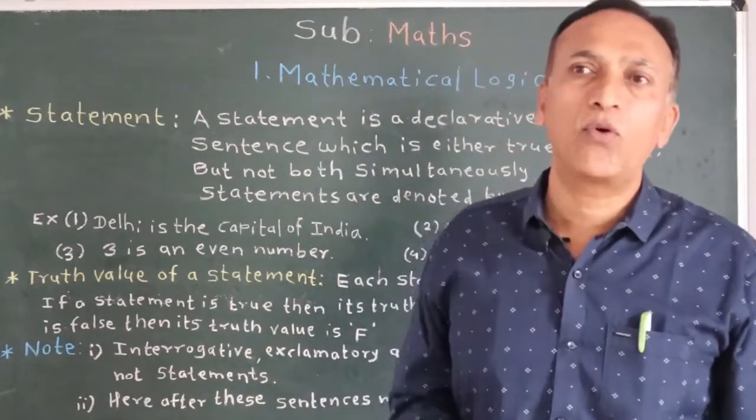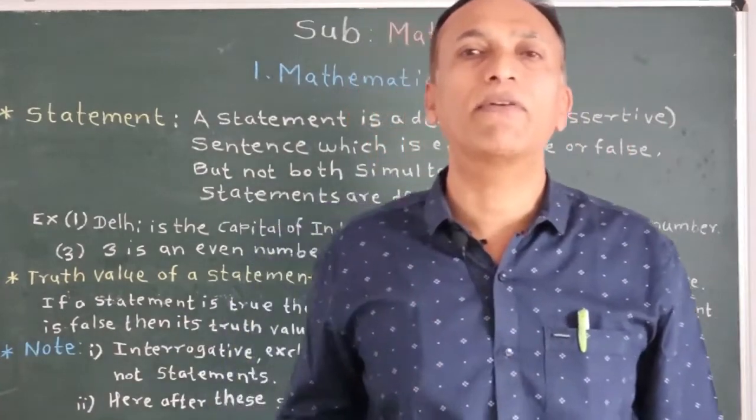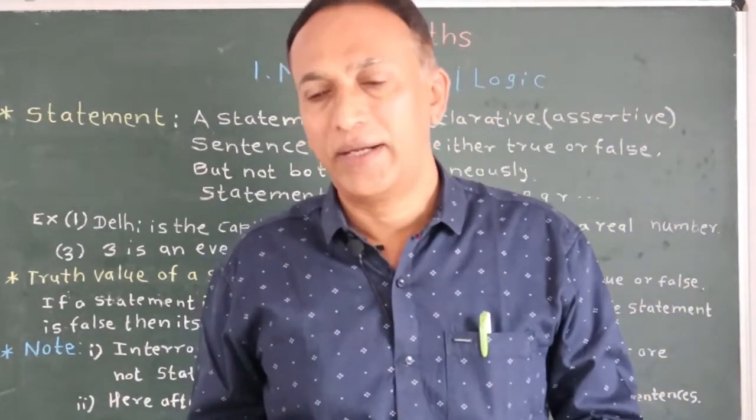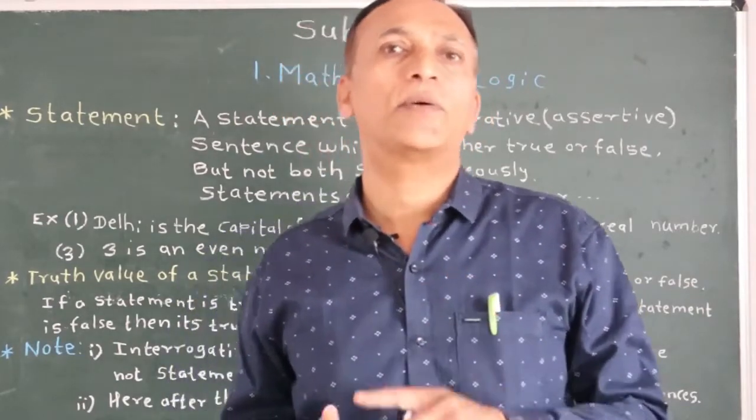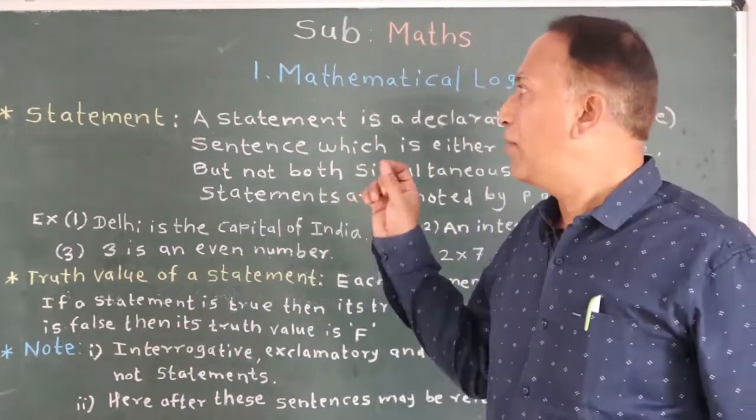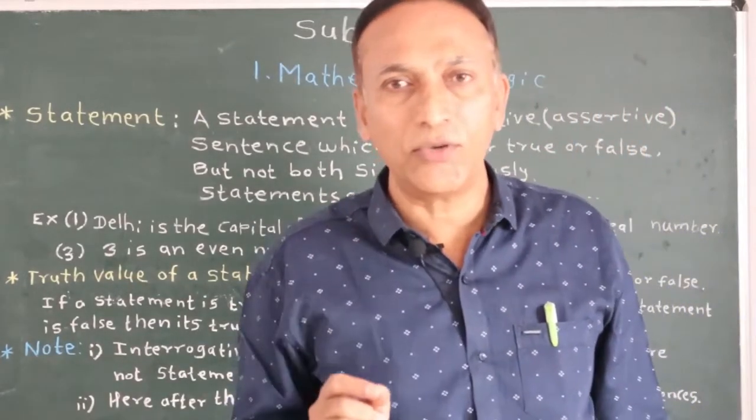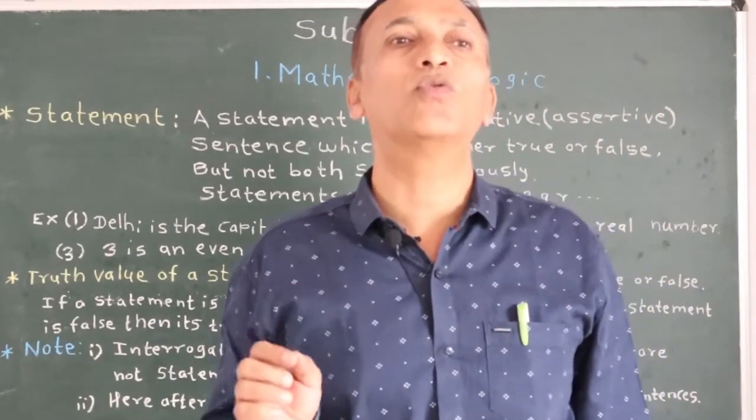We know there are four types of sentences in English language: assertive sentence, interrogative sentence, exclamatory sentence, and imperative sentence. In this chapter we have to study the assertive sentences, because assertive sentence is a declarative sentence which is either true or false.